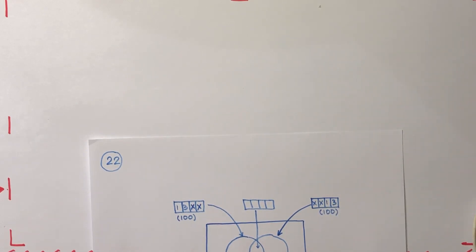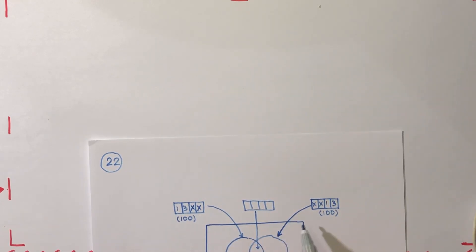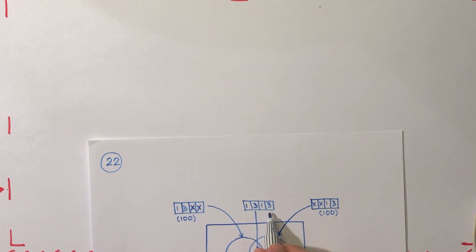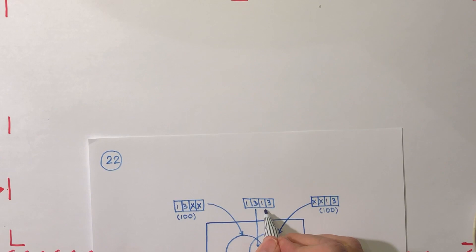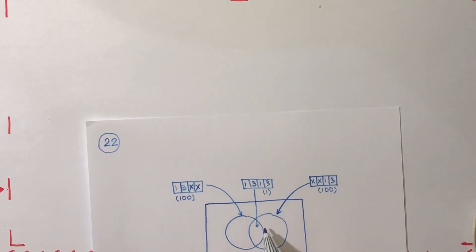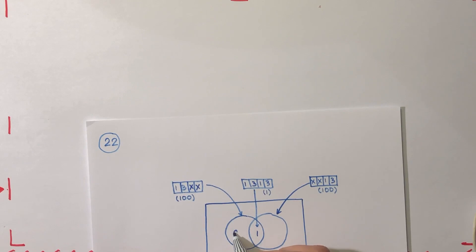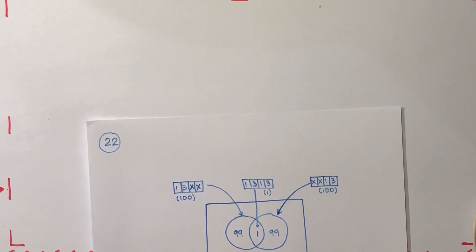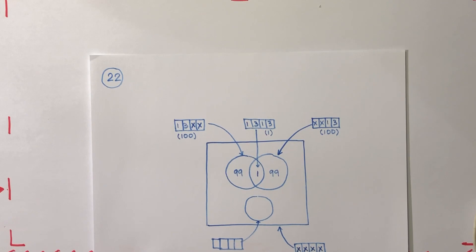There is one number that belongs to both groups — the number 1-3-1-3, which has 1-3 at the front and 1-3 at the back. That overlap is clearly just 1. In the Venn diagram, we write 1 in the intersection. Since each full set has 100 numbers, each non-overlapping region contains 99. So 99 and 99, which gives 100 per set.